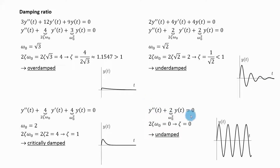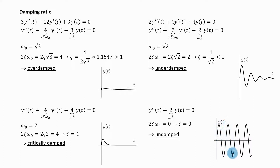Now the last case, this equation. Here I can see that my natural frequency squared is two. It's difficult to see what zeta is because I'm missing the first derivative — it is being multiplied by zero. The coefficient in front of the first derivative is zero, meaning two zeta omega naught equals zero, so zeta is zero. That means I have the undamped case. My system will respond with oscillations that will not be damped and the system will oscillate indefinitely. This is how you can judge the damping type based on the coefficients of the differential equation using the damping ratio.